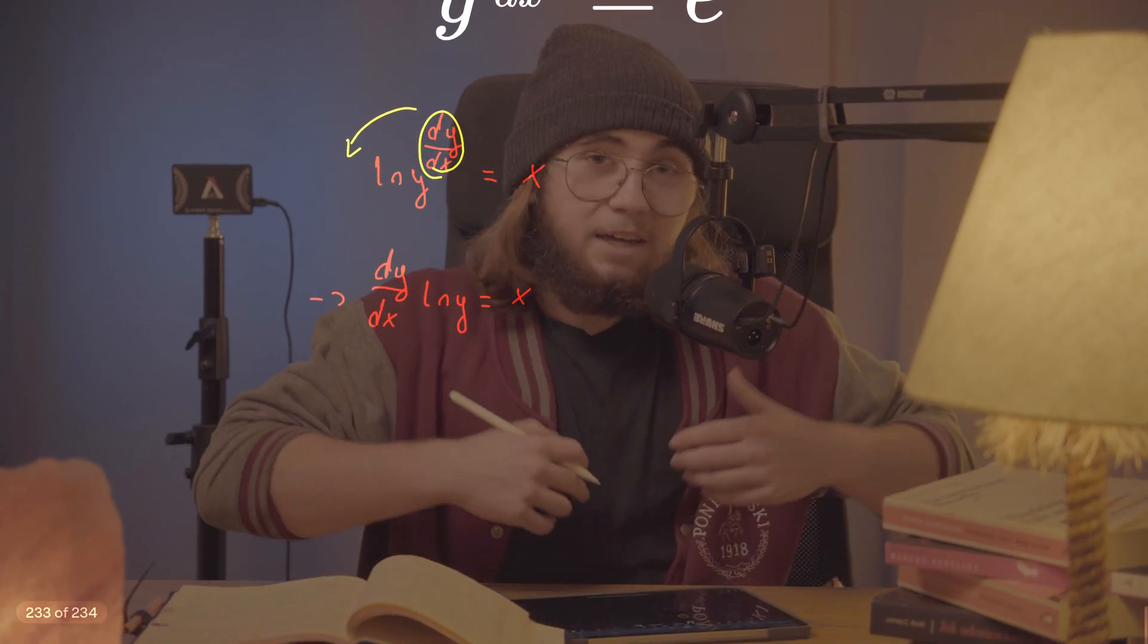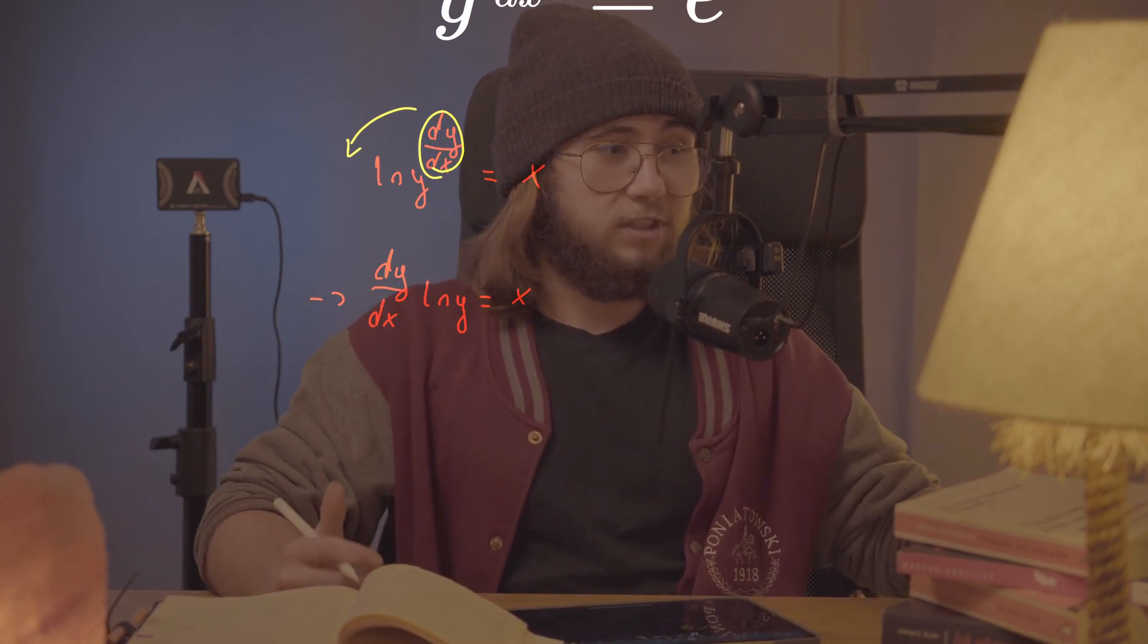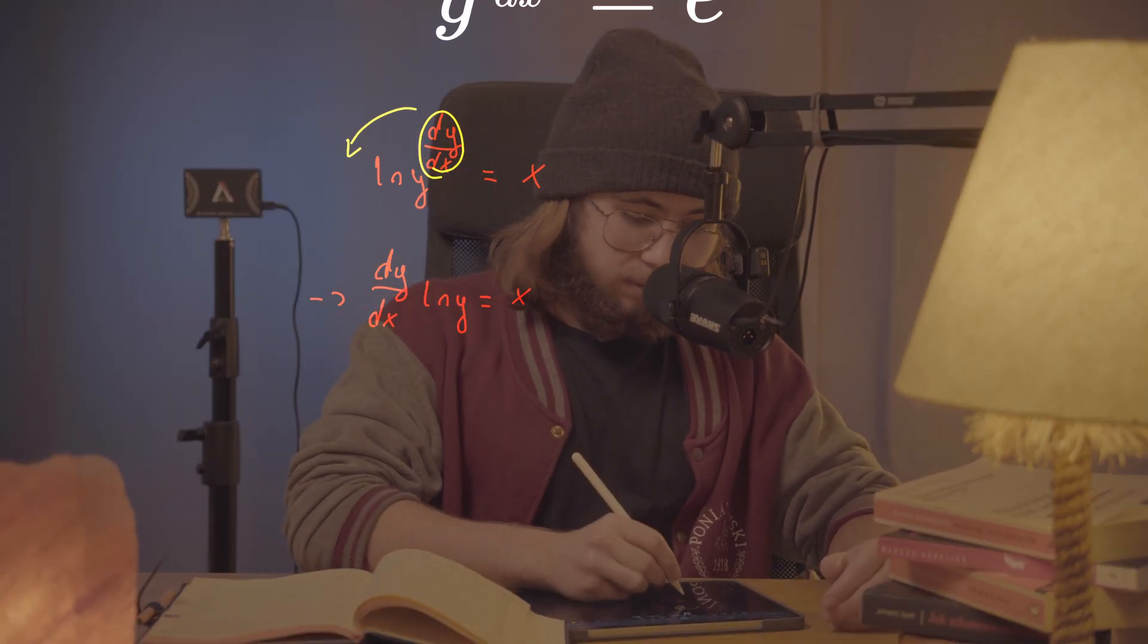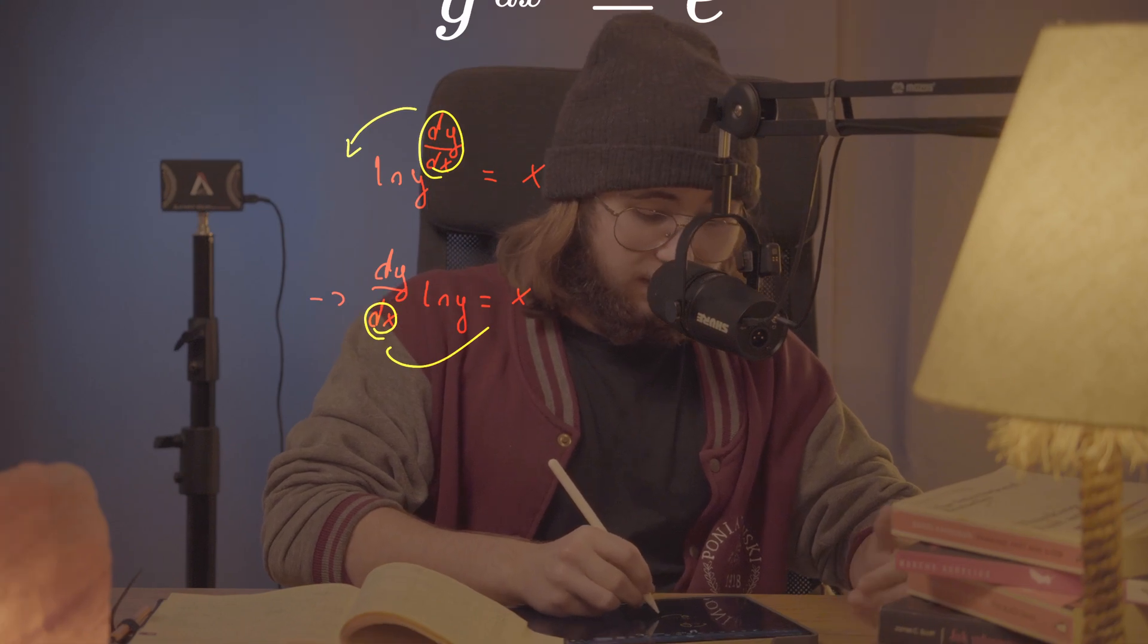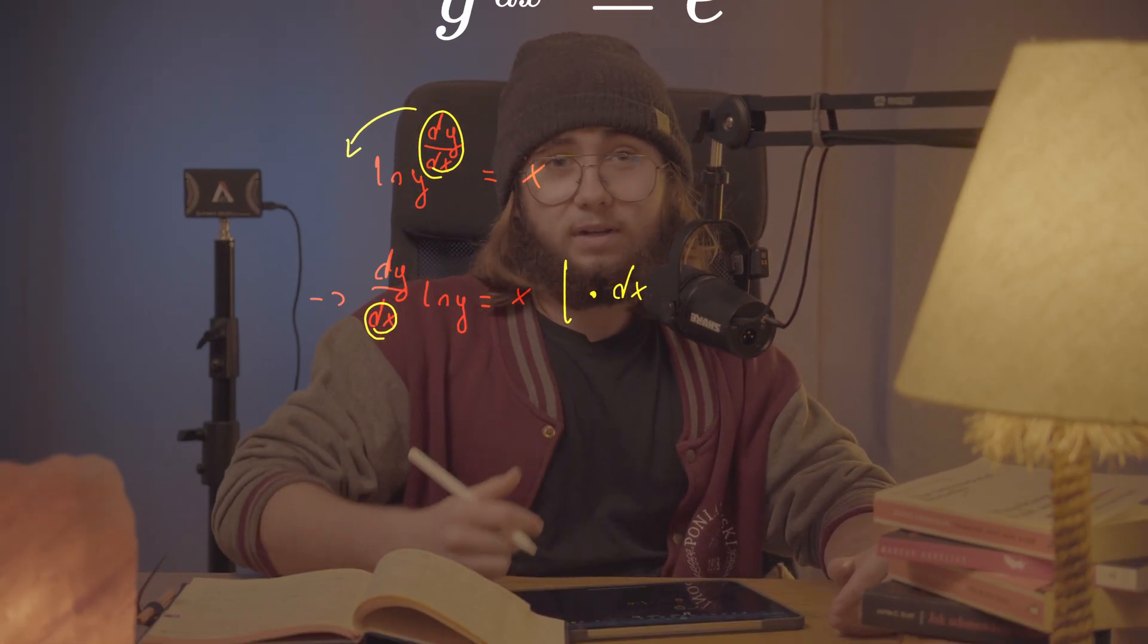And now I could say stuff like we have to make those two variables function of some parameter t, and then we have to use the chain rule or stuff. But you know what? Calc professors, fuck you! And I'm just gonna multiply everything by dx. And I'm gonna even fucking write it down here. What now?